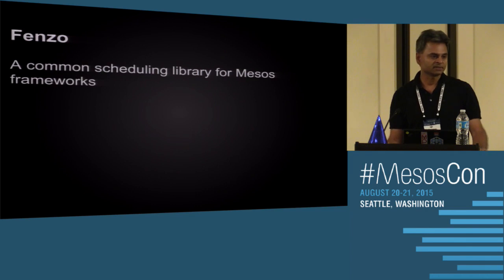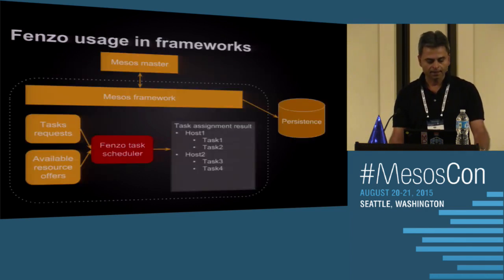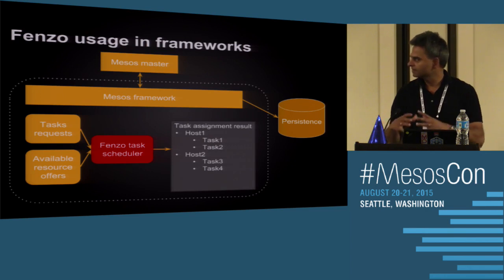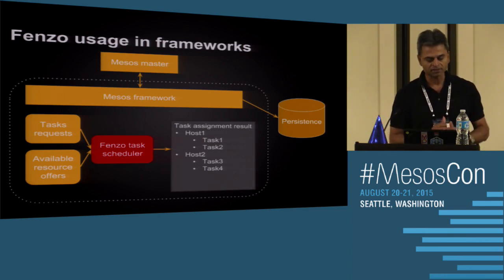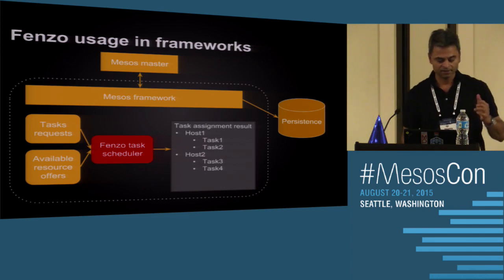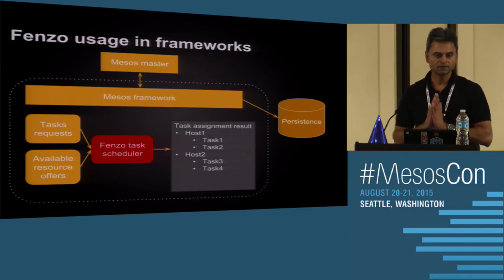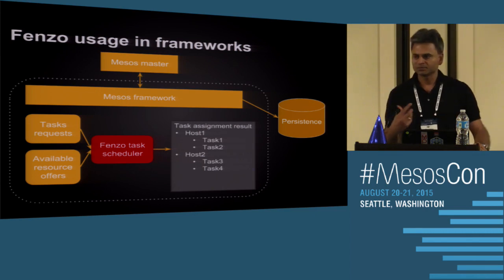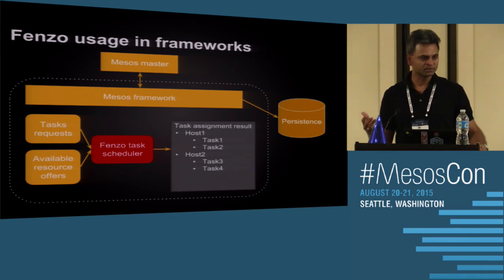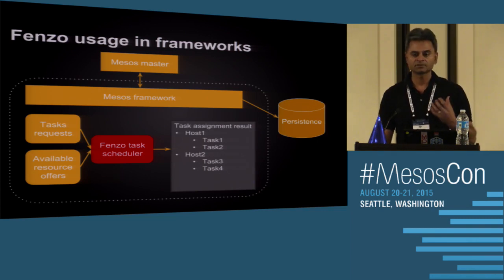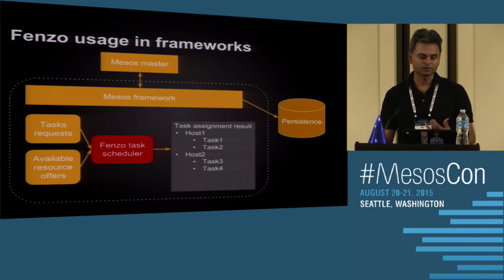We developed a scheduling library called FENZO. The framework receives offers and pending tasks, and feeds both — along with objectives like bin packing and task legality — into FENZO. FENZO produces assignments, which the framework then uses to call the Mesos driver to launch tasks on those hosts.